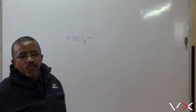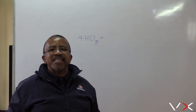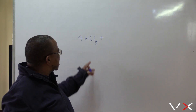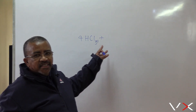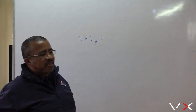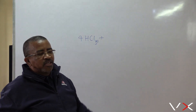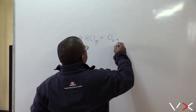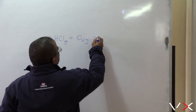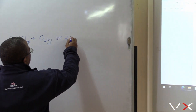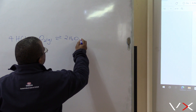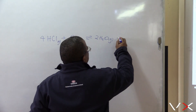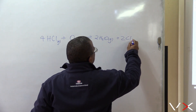HCl — we call it hydrogen chloride in gas form. But when it's a liquid, we call it hydrochloric acid, because in liquid form it has all the properties of an acid. So we have O2 gas in equilibrium, forming steam — H2O gas — plus two Cl2 gas.